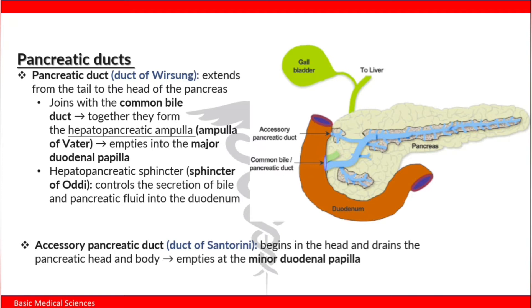The pancreatic duct joins the common bile duct and together they form the hepatopancreatic ampulla, also known as the ampulla of Vater. This ampulla of Vater empties into the major duodenal papilla.